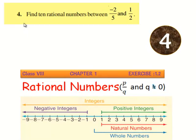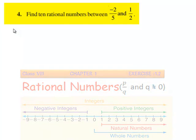Now, let us move on to the fourth question. The question given is, find 10 rational numbers between minus 2 by 5 and 1 by 2.